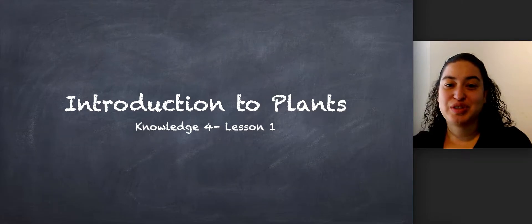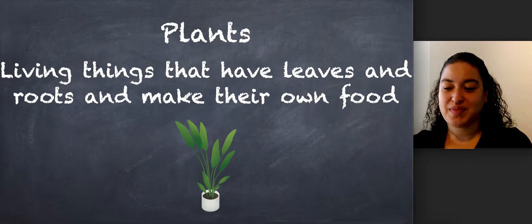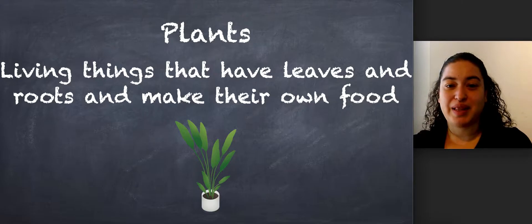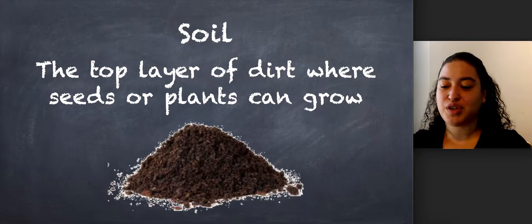In today's lesson, we are going to be learning about plants. This lesson is called Introduction to Plants. Let's go over some vocabulary. Our first word is plants. Plants are living things that have leaves and roots and make their own food. And our last vocab word is soil. Soil is the top layer of dirt where seeds or plants can grow.